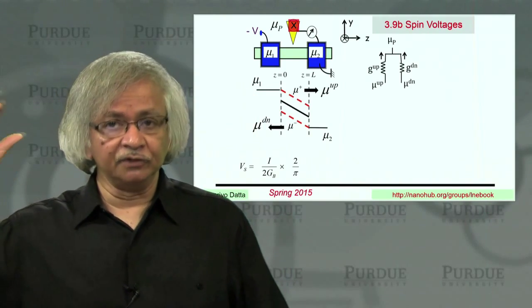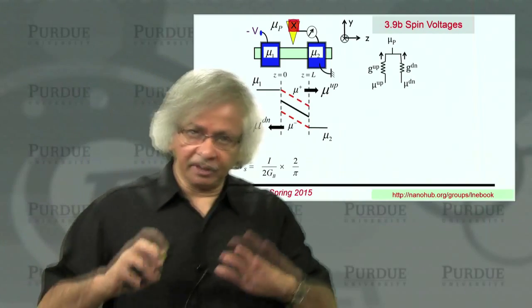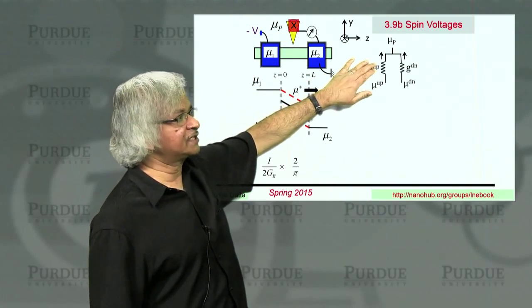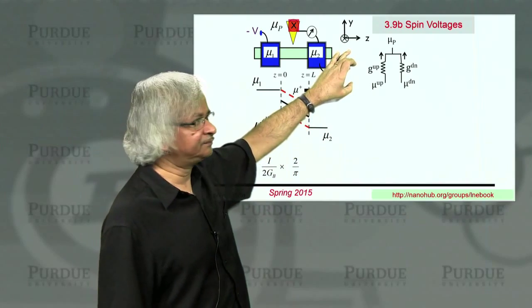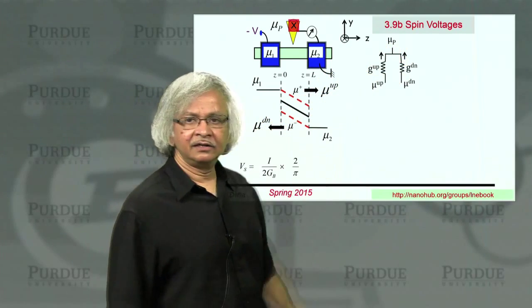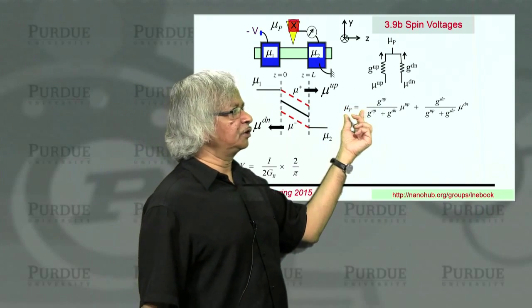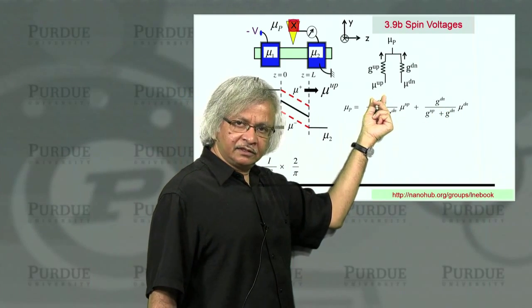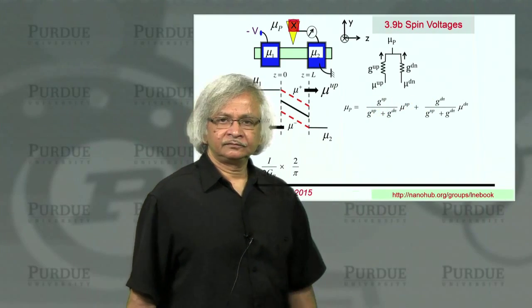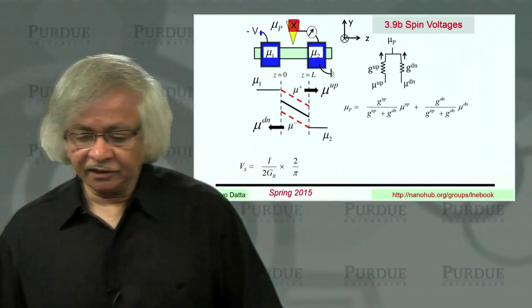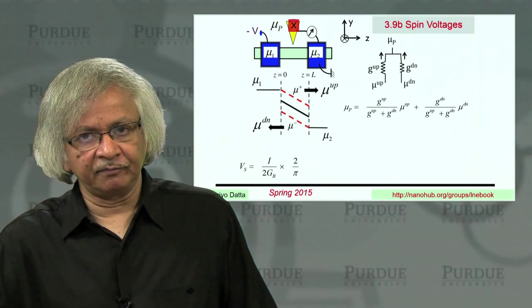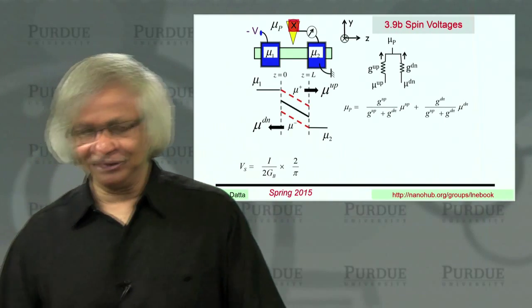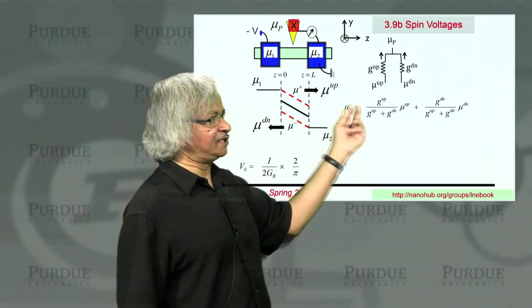That's again another important development of the last 20 years in this field, which is the basis for a lot of useful devices, where it is clearly established that a magnet in a certain, pointing in a certain direction has a relatively low resistance contact to spins in that direction. And so g up could be much bigger than g down. And then the actual probe potential would be again a weighted average of up and down. And the weighting depends on these two conductances, up and down.